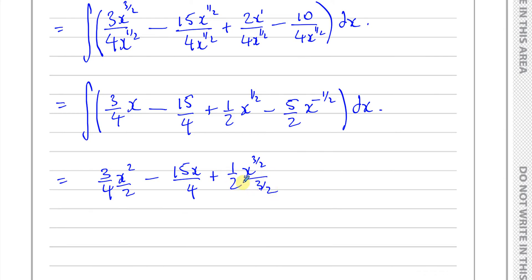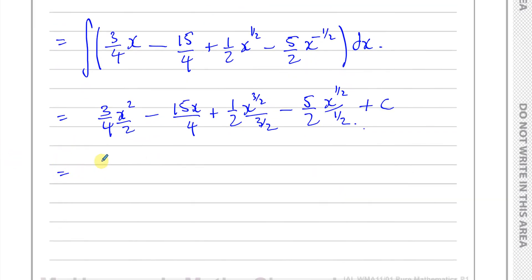And you're going to have minus 5 over 2 x to the power of a half divided by a half. And then, very important, plus c, the constant of integration. You must always write that, otherwise you'll definitely lose marks, because when you differentiate there could have been a constant that got cancelled out.